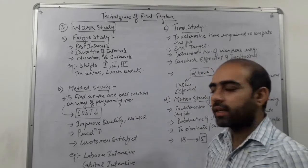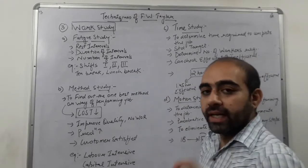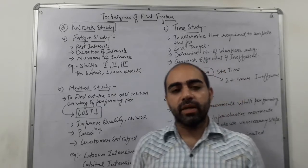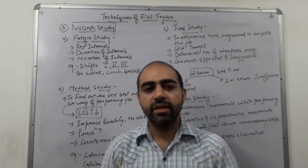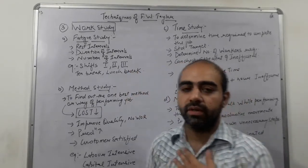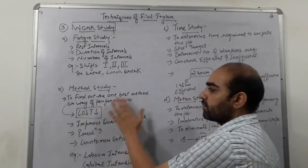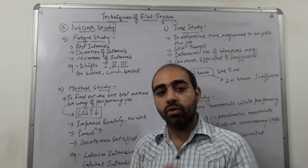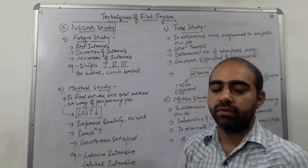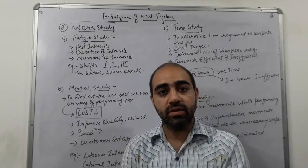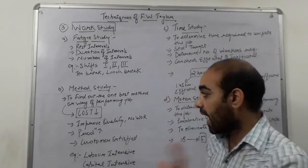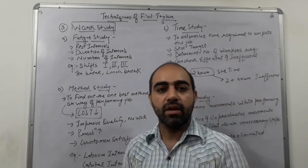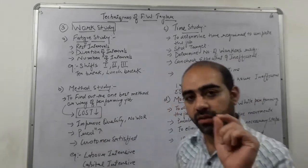Now the second technique of work study is method study. F.W. Taylor says that in the world there are different methods to do a job. The goal is to find out the one best method for performing a job. You must choose the best method among alternatives, and that method should focus on cost reduction.